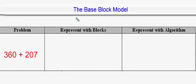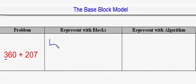In this problem we're going to add integers, so I'm going to represent both addends in the problem with blocks. For example, the number 360: since there's a 3 in the hundreds place, I will represent that with 3 flats, representing 3 objects that represent 100 units.